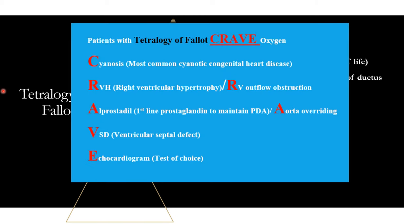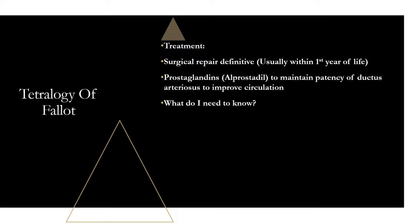To remember Tetralogy of Fallot: patients with Tetralogy of Fallot crave oxygen — they're cyanotic. CRAVE stands for: C = Cyanosis (most common cyanotic congenital heart disease); R = Right ventricular hypertrophy and right ventricular outflow obstruction; A = Alprostadil (first line prostaglandin to maintain PDA); V = VSD; E = Echocardiogram (test of choice). So remember the four components of the defect, the treatment medication, and the test of choice all in one word: CRAVE.